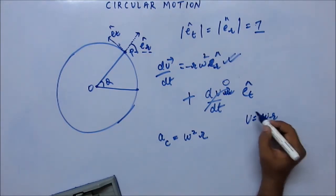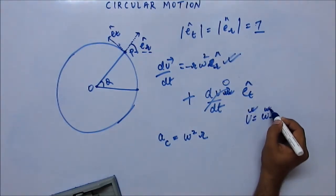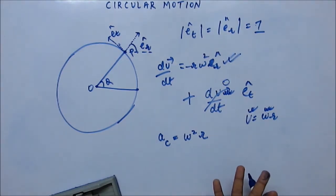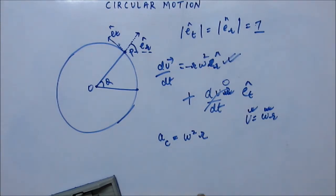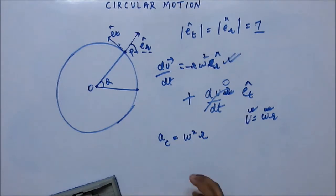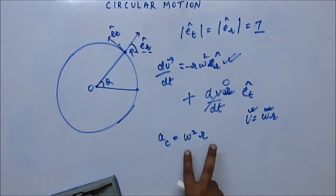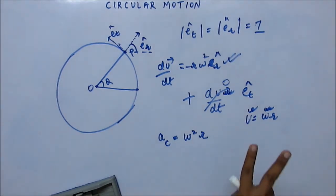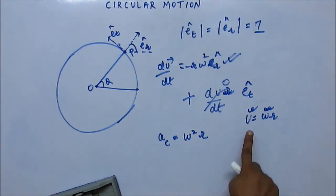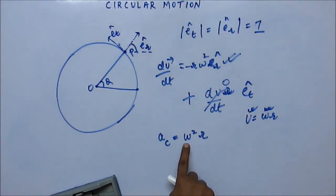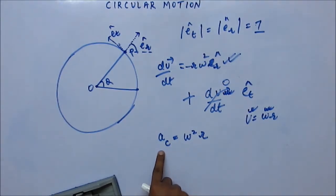If you have tangential acceleration, velocity is increasing. Since v equals omega r and r is constant, omega has to increase. If omega increases, then centripetal acceleration, which is omega squared r, will also increase — it cannot remain constant. Both are dependent on the variable omega. So if there is tangential acceleration, velocity is going to change, omega is going to change, and therefore centripetal acceleration is also going to change.